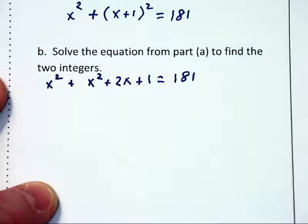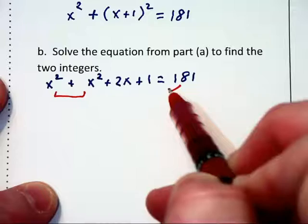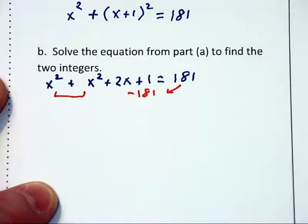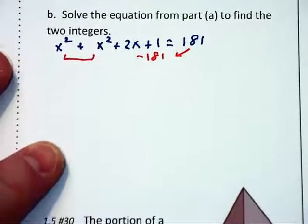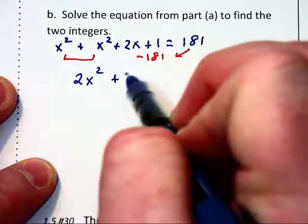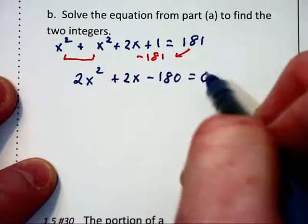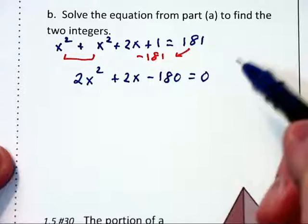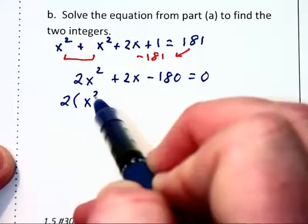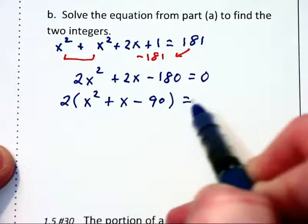I'm going to combine like terms on the left and subtract off the 181 from each side of the equation. We will now have 2x squared plus 2x minus 180 equals 0. We notice that all three terms are even, so we can factor a 2 out, leaving x squared plus x minus 90 equals 0.